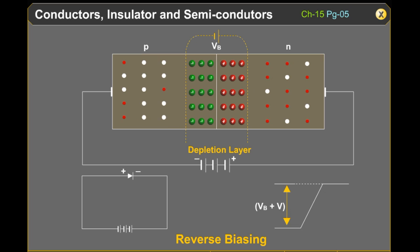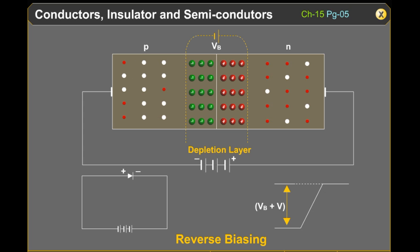Reverse biasing: in reverse biasing, the applied voltage V mostly drops across the depletion region of the P-N junction, and its direction is the same as that of the potential barrier. Due to this, the reverse bias voltage supports the potential barrier. Therefore, the barrier height increases and the width of the depletion region increases. The effective barrier height under reverse bias is VB plus V.